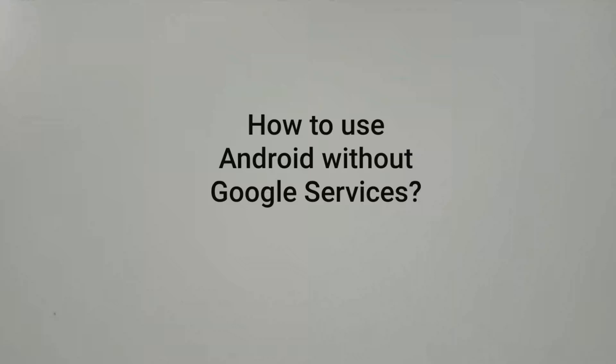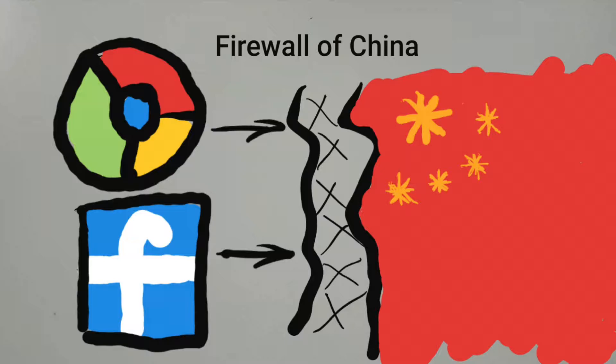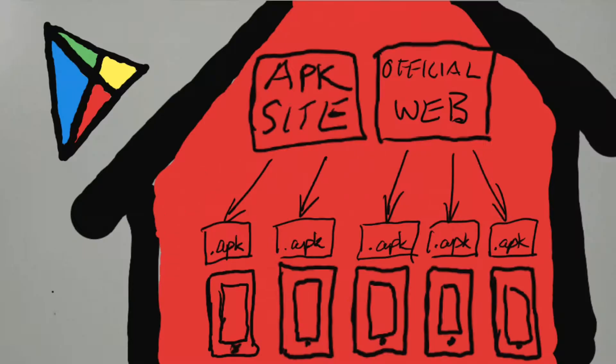This includes downloading apps without the Google App Store. In China, Google services along with many Western apps are banned. But with Android being open-sourced, APK packages could be downloaded wherever they're available. In China, people mainly download from third-party app stores or official websites.